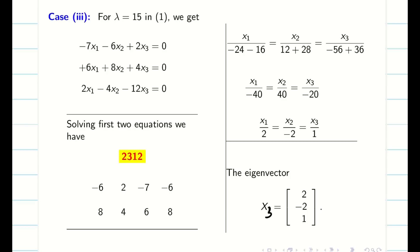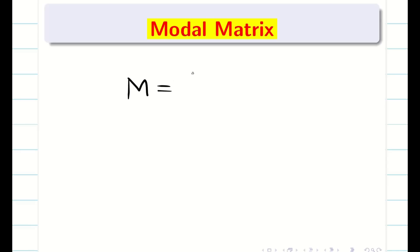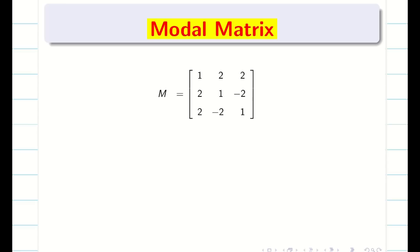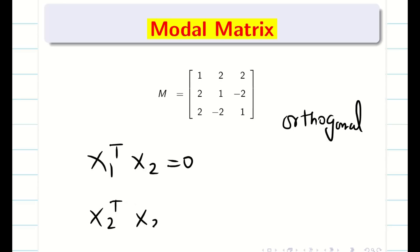The same question arises: what is the guarantee that your eigenvectors X1, X2, X3 are correct? There might be errors. So let us check whether the eigenvectors are correct or wrong. We form a modal matrix by writing eigenvector 1, eigenvector 2, and eigenvector 3 as columns, giving a 3×3 modal matrix. If the original matrix is symmetric, then there is a result: all three eigenvectors are mutually orthogonal — that is, X1-transpose times X2 equals 0, X2-transpose times X3 equals 0, and X3-transpose times X1 equals 0.